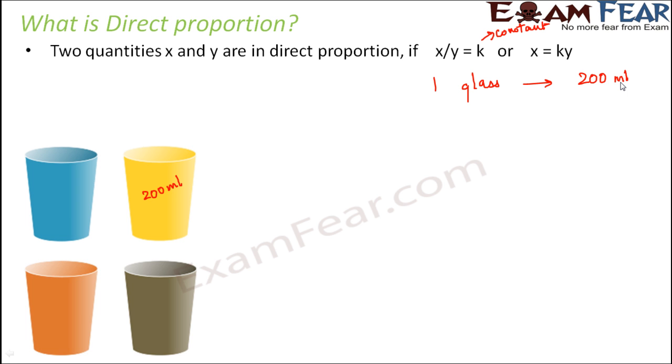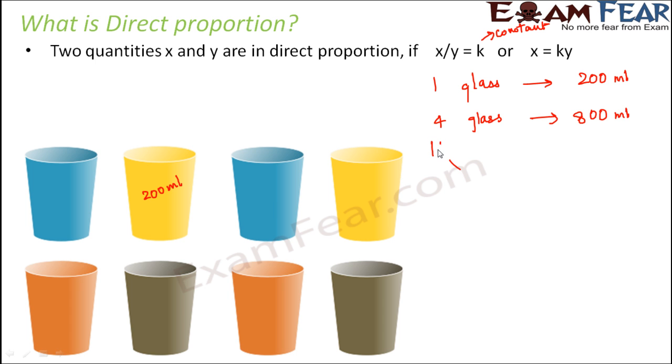Now instead of one, if you have four glasses, then what happens? Because each glass will have a capacity of 200 ml, therefore four glasses will have a capacity of 800 ml. 200 into four, so four glasses will have capacity of 800 ml. Similarly, if you have eight glasses, in this case we have shown on the screen eight glasses, the capacity would be 200 into eight, which is 1600 ml.